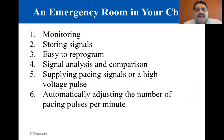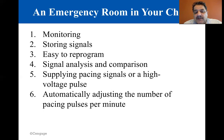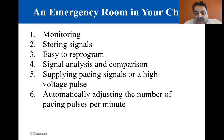The latest ICDs are capable of many functions: one, monitoring both atrial and ventricular chambers to differentiate between atrial and potentially fatal ventricular arrhythmias requiring prompt regulation; two, storing about half an hour of heart signals easily accessed by a physician; three, being easily reprogrammed with an external magnetic wand; four, performing complicated signal analysis and comparison; five, supplying 0.25 to 10 volt repetitive pacing signals to speed up or slow down a malfunctioning heart, or a high-voltage pulse of about 800 volts to halt the potentially fatal condition of ventricular fibrillation, in which the heart quivers rapidly rather than beats — people who have experienced such a jolt say it feels like a kick or a bomb going off in the chest; and six, automatically adjusting the number of pacing pulses per minute to match the patient's activity.